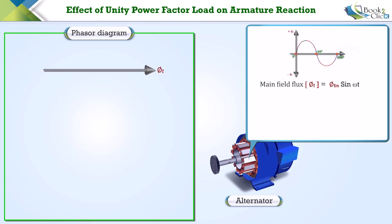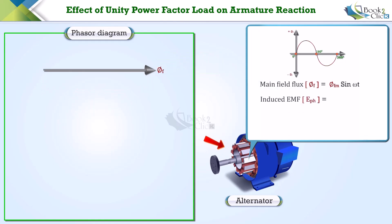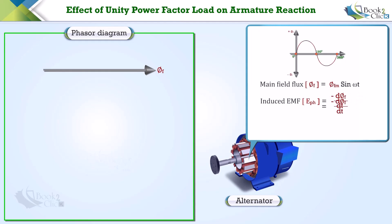We will take phi_f as a reference vector. The length of this line represents the magnitude of the main field flux and the arrowhead represents the direction. Since the rotor is rotating, induced EMF e_ph will be induced in the armature conductor. We know that induced EMF e_ph equals −dφ_f/dt. Substituting the value of phi_f into this equation, we get −ω·φ_fm·cos(ωt).